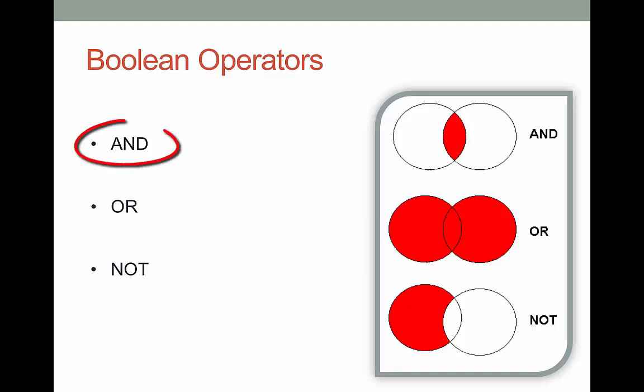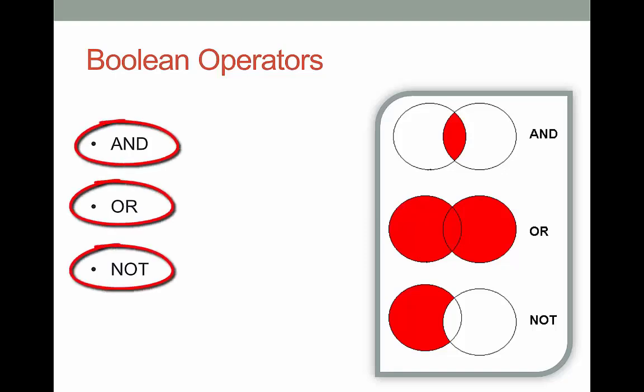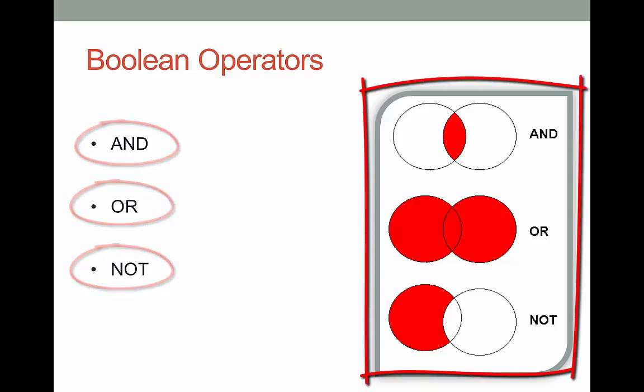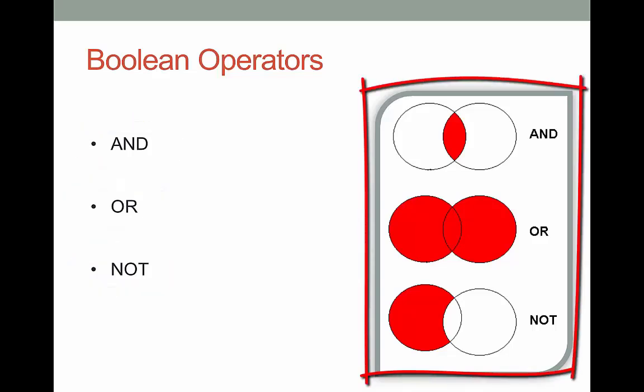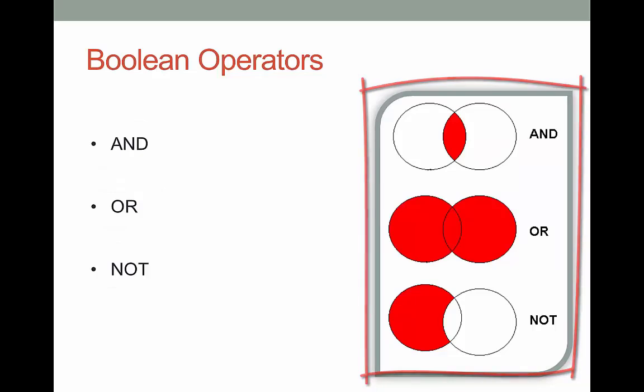There are three — AND, OR, NOT — and they're usually associated with an image like a Venn diagram. It's a visual way of showing how these terms can narrow, expand, or limit your search so you find just what you need, not one million hits.